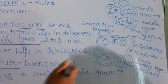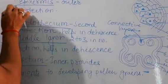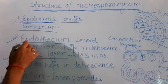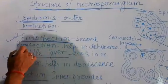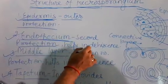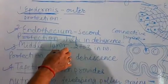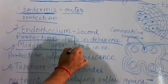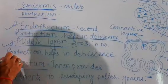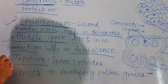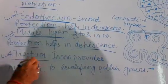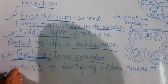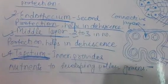After observing both diagrams, we explain the function of each layer. The epidermis is the outer layer of the microsporangium and helps in protection. The second layer, the endothecium, also helps in protection as well as dehiscence. The middle layer, just below the endothecium, is two or three in number and also helps in protection. The tapetum is the last and innermost layer, and its function is to provide nutrients to the developing pollen grains as well as protection.